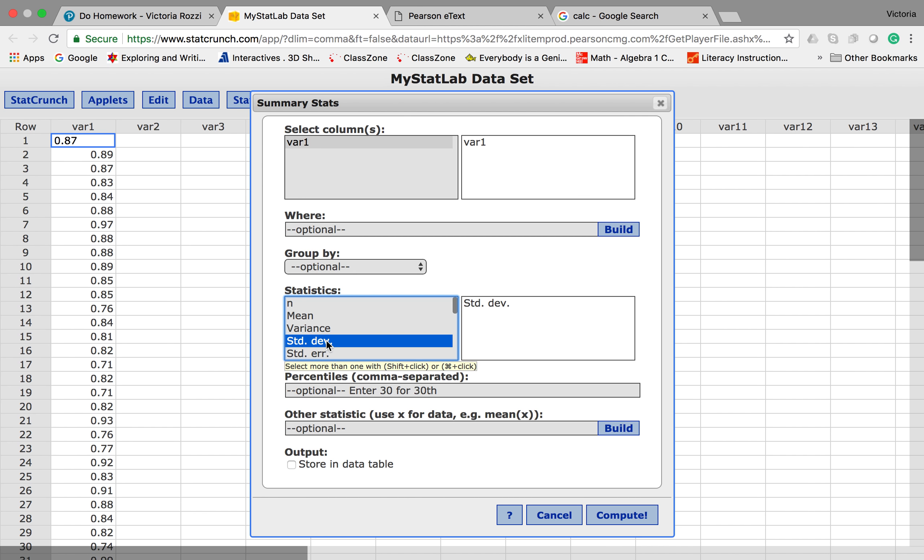A quick note on standard deviation in StatCrunch. Standard deviation here is the sample standard deviation. If you want the population standard deviation, remember the sample standard deviation is divided by n minus 1, the population standard deviation is only divided by n. If you needed the population sample standard deviation, you want the unadjusted standard deviation.